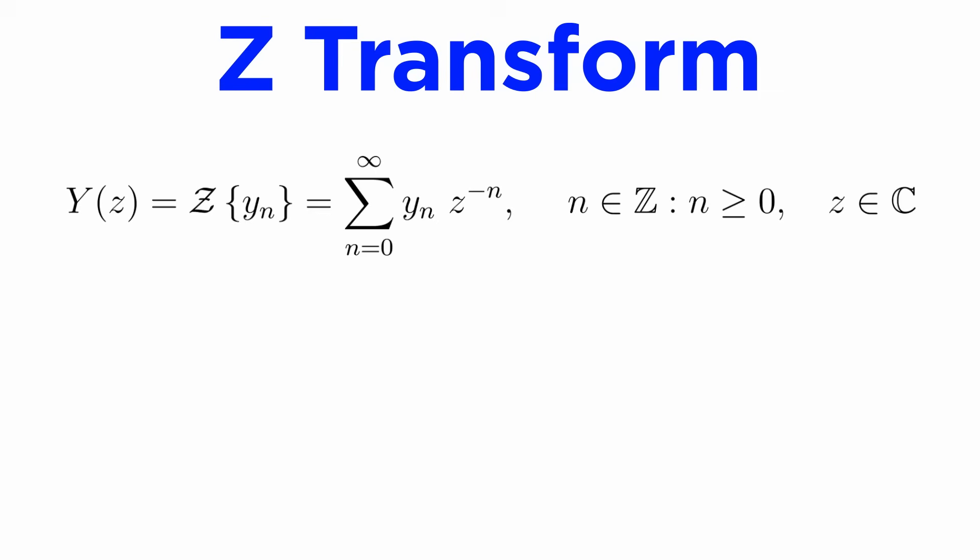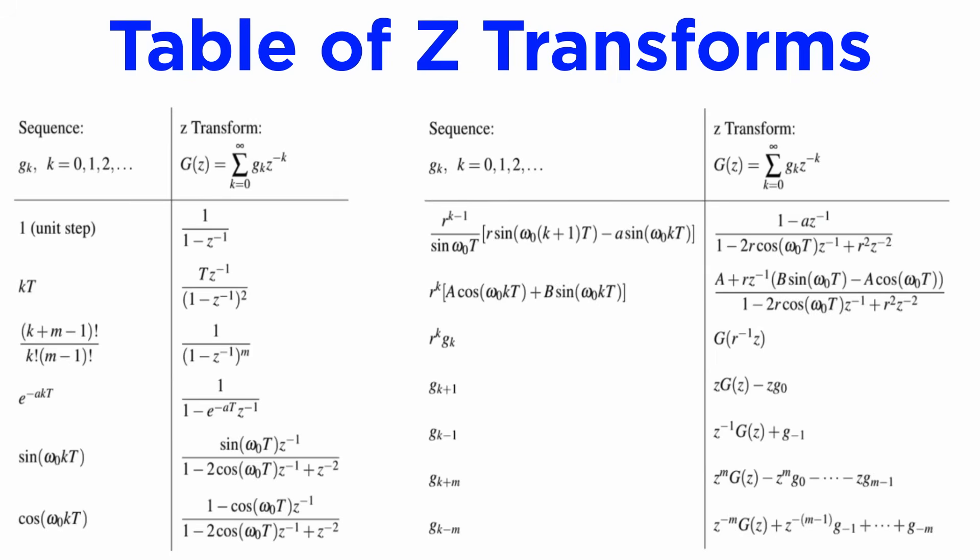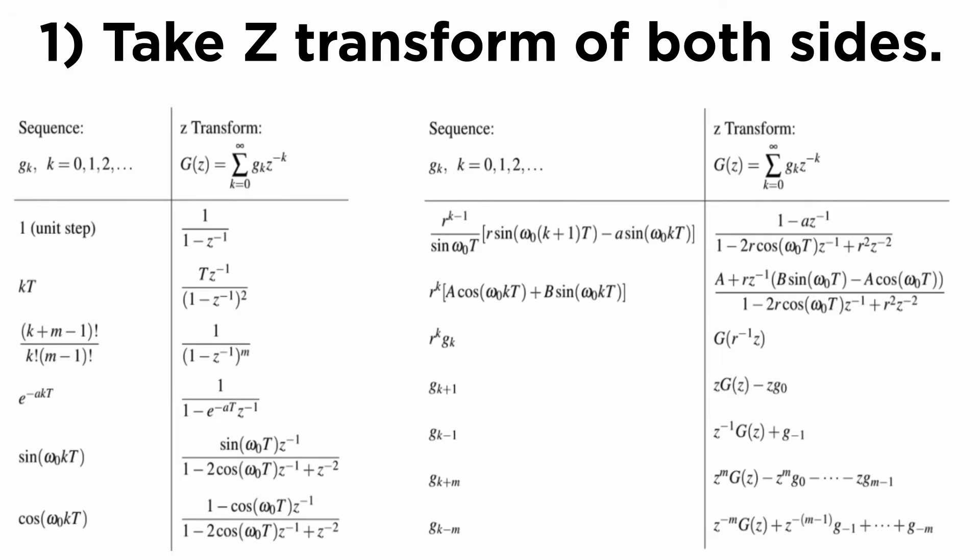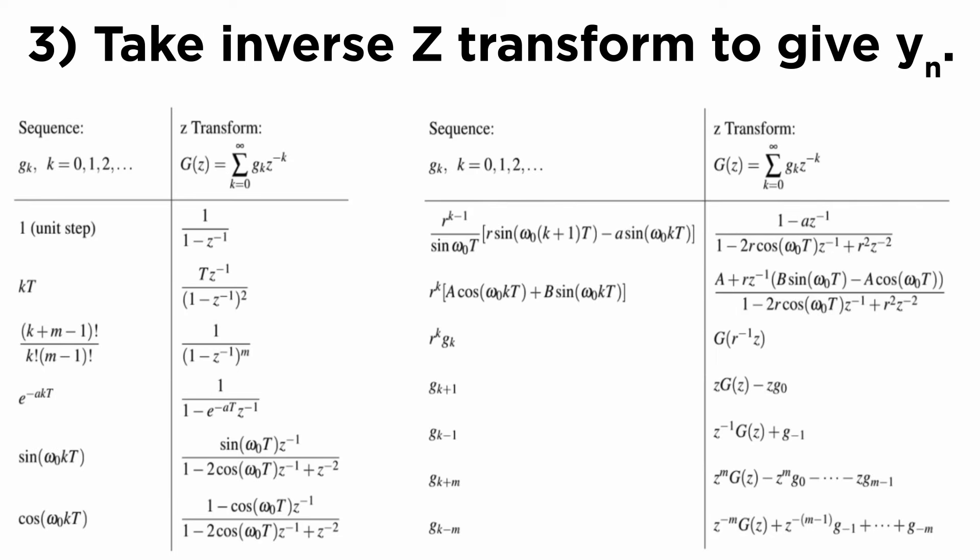Now let's look at what is effectively the discrete version of the Laplace transform from the previous tutorials. The z-transform is defined as the sum from n equals 0 to infinity of a sequence y sub n times z to the minus n, where z is a new, generally complex valued variable, like the s variable from the Laplace transform. Z-transforms are tabulated for a variety of common functions in the table shown here. Any linear non-homogeneous difference equation with constant coefficients can therefore be solved by taking the z-transform of both sides, isolating the transformed solution capital Y of z, and then taking the inverse z-transform using the table to give y sub n in the index domain.